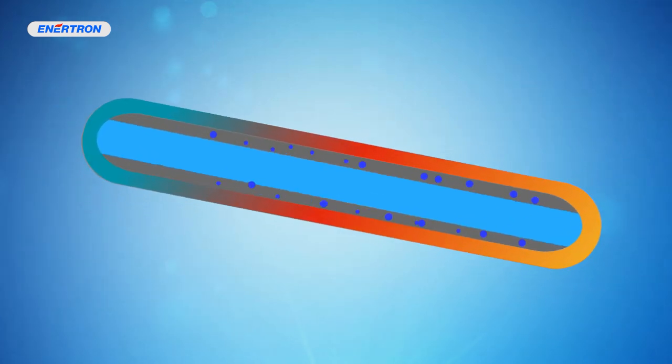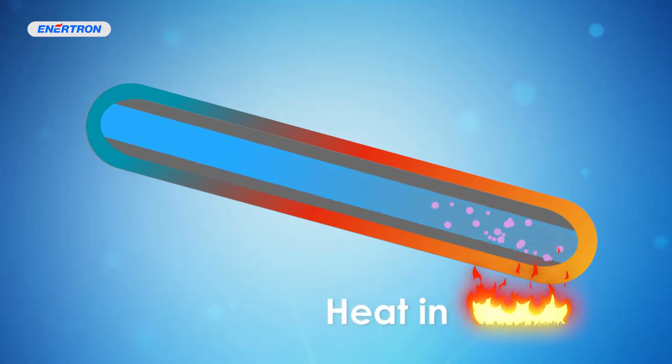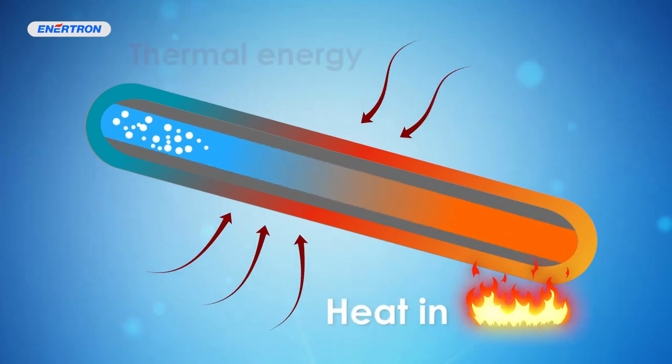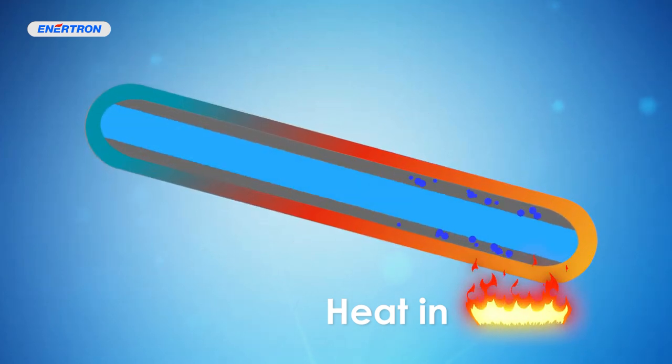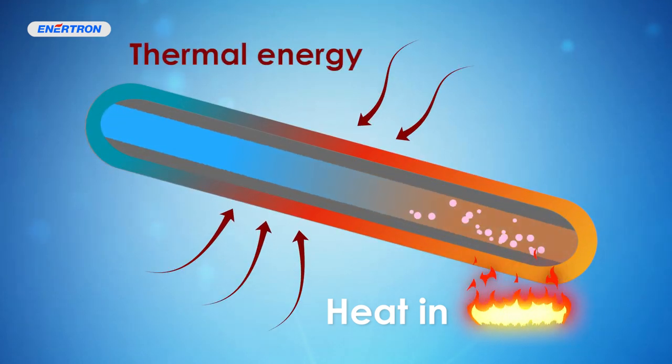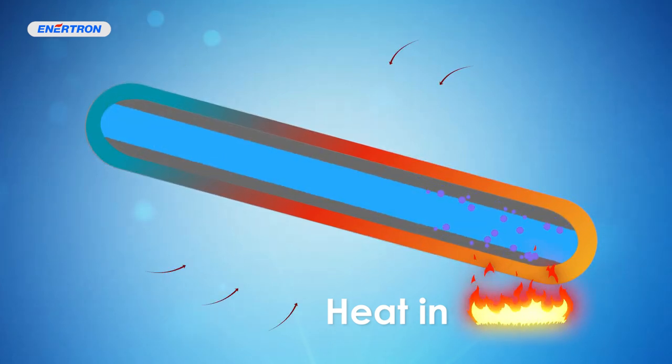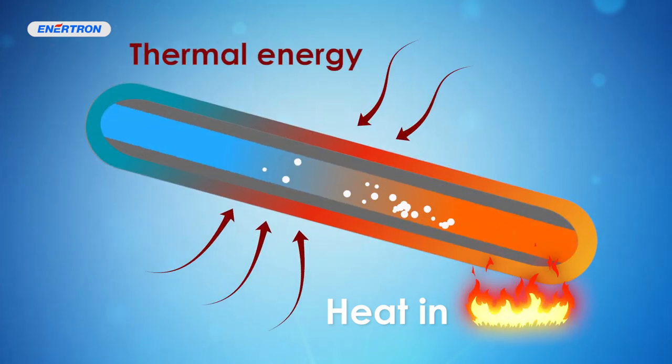When heat is inputted into one end of the heat pipe, the working fluid begins to boil and absorb large amounts of heat using only a small amount of working fluid. During this process, the phase change to vapor occurs with no change to the temperature inside the heat pipe vessel. This change from liquid phase to vapor phase is called latent heat of evaporation.